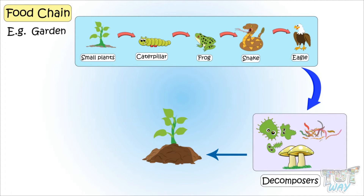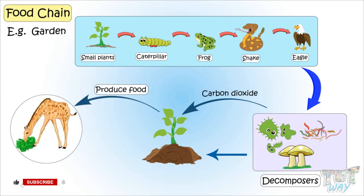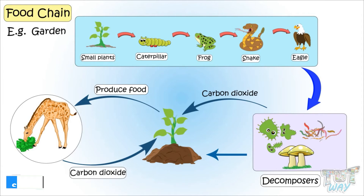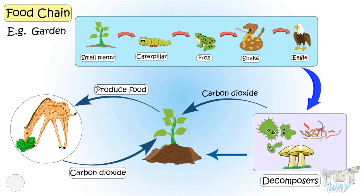Microorganisms, while decomposing the animal waste, also release carbon dioxide to the air, which is also used by plants to breathe. Thus, plants produce food for animals, and animals give carbon dioxide for plants while breathing. And animals are also reduced to nutrients and carbon for plants when they are dead. So plants and animals are dependent upon each other.